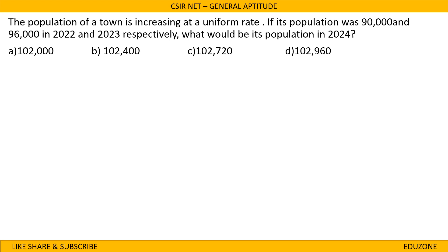Second question: the population of a town is increasing at a uniform rate. If its population was 90,000 in 2022 and 96,000 in 2023, what would be the population in 2024? Population in 2022 was 90,000 and in 2023 it was 96,000.